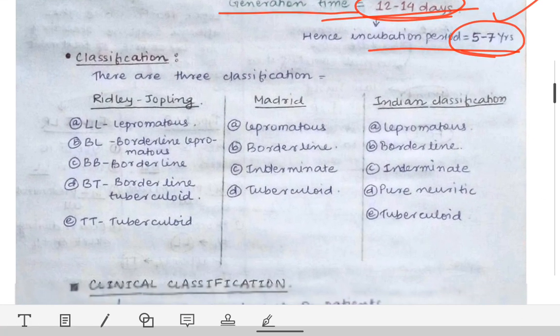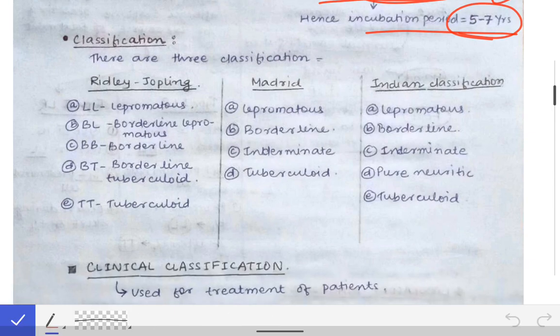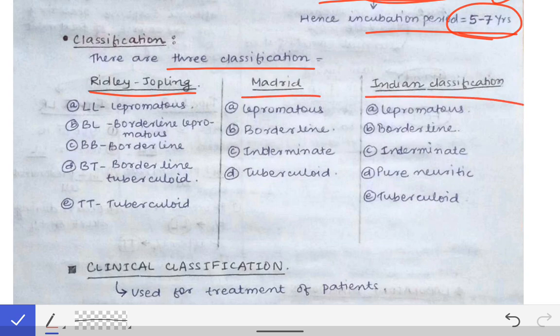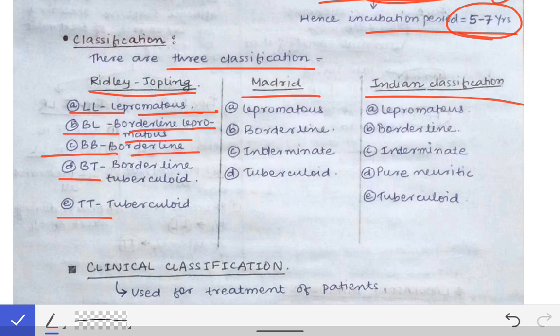Leprosy has been classified differently across different decades. There are basically three classifications: the Ridley-Jopling classification, the Madrid classification, and the Indian classification. In the Ridley-Jopling classification, the stages are LL (lepromatous leprosy), BL (borderline lepromatous), BB (borderline), BT (borderline tuberculoid), and TT (tuberculoid leprosy). These classifications are sometimes asked in viva exams.